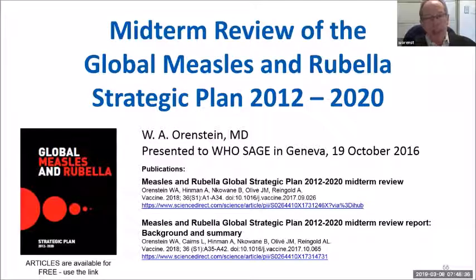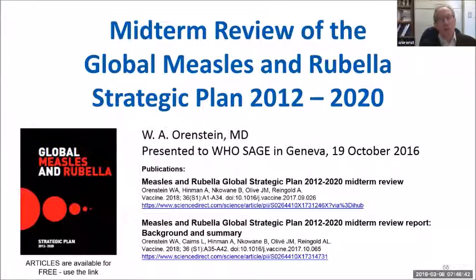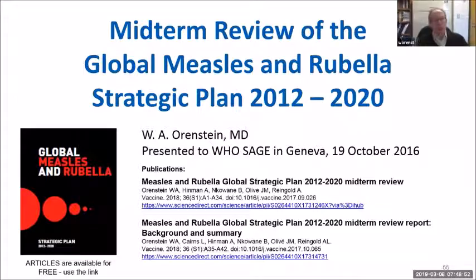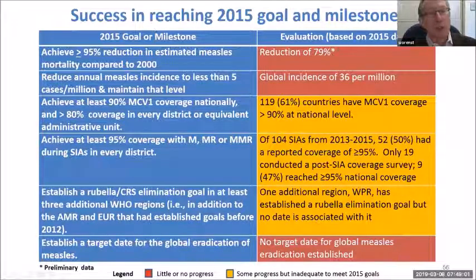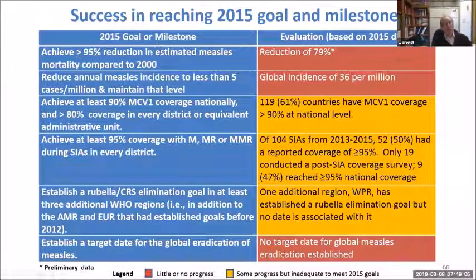Regarding global eradication, the speaker was asked to chair a midterm review of the global measles and rubella strategic plan for 2012 to 2020, presented to SAGE in 2016. The bottom line is that a number of goals were set in the 2012 plan to be achieved by 2015.